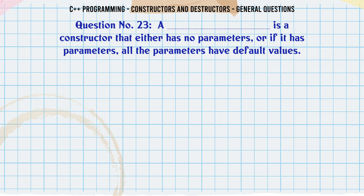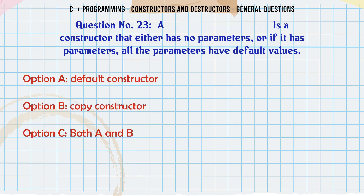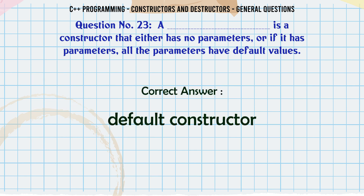A constructor that either has no parameters or if it has parameters all the parameters have default values: A. Default constructor. B. Copy constructor. C. Both A and B. D. None of these. The correct answer is Default constructor.